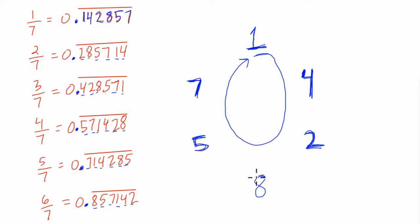And for 6 sevenths, we start at 8, and that goes around—oops, oh boy, I really butchered that 8. That's an 8. It goes 8, 5, 7, 1, 4, 2. So this pattern, if we put the numbers into a circle, we can see, oh, sevenths just follow the circular pattern of digits.